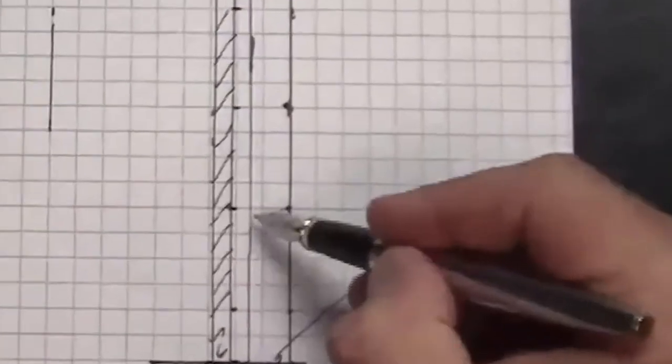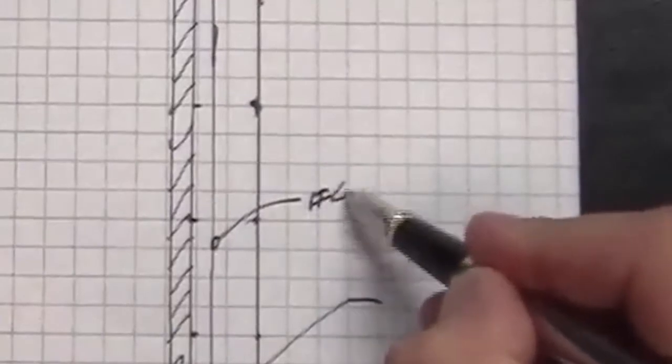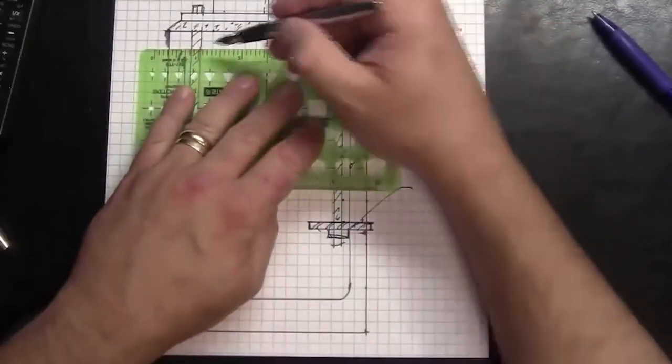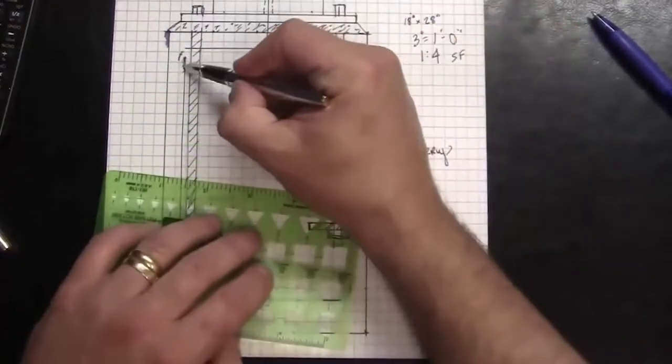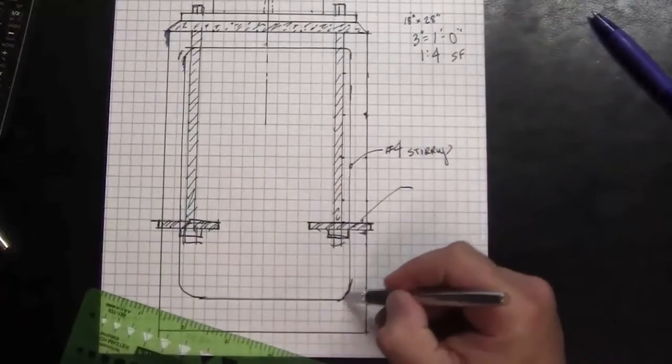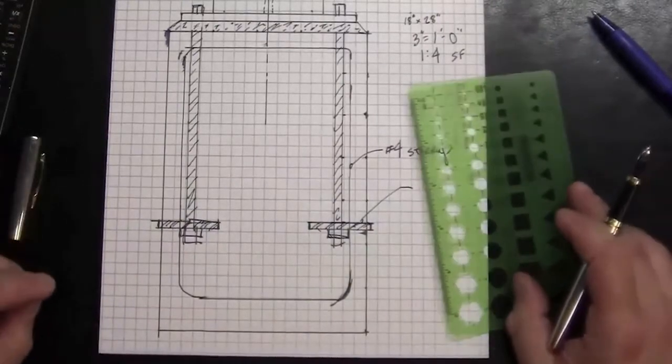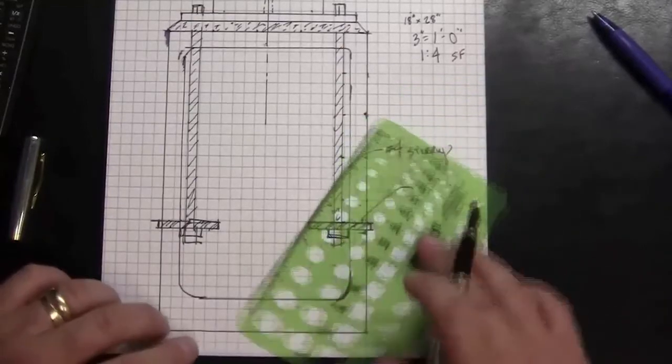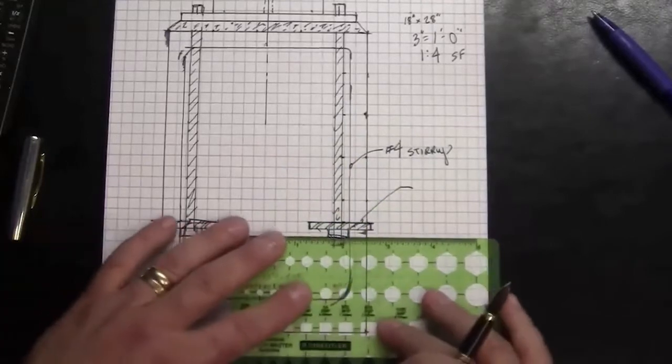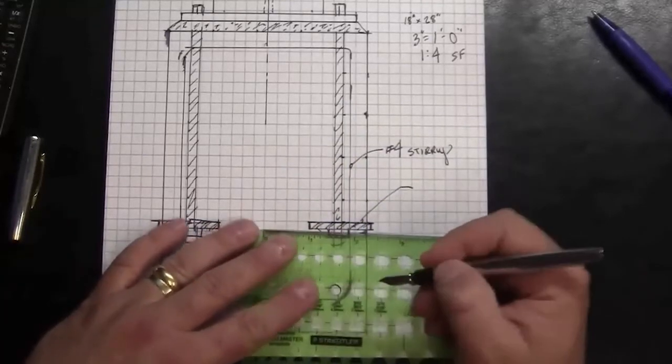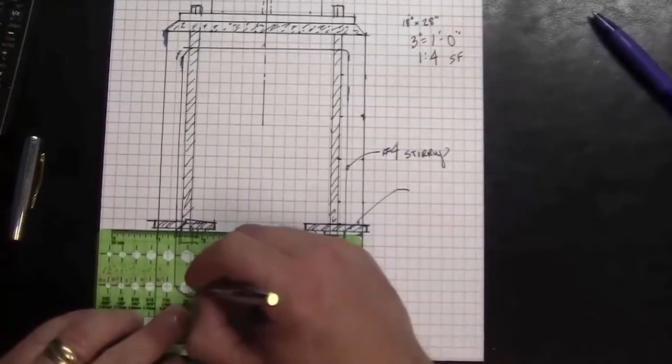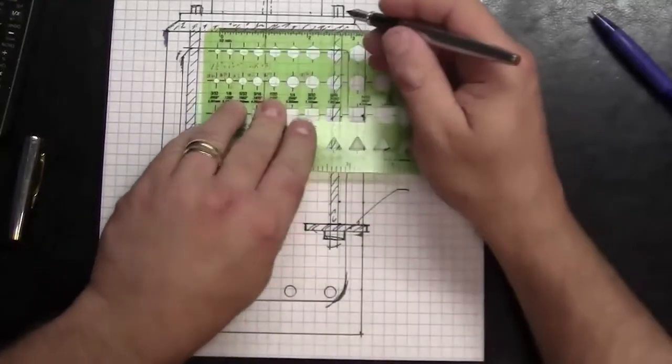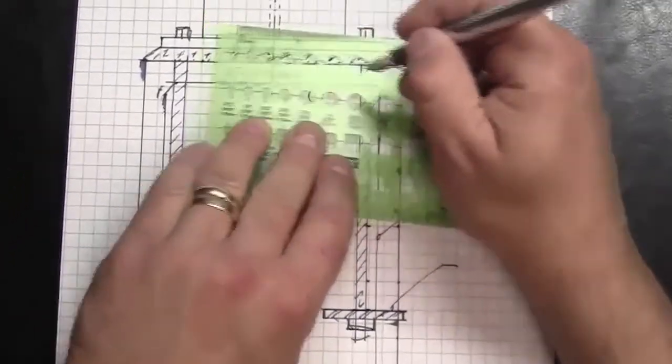Often, this will be a number 3 or a number 4 bar. I'm going to show it with a number 4 stirrup. And as I begin looking at this, I'm going to show number 8 bars. A number 8 bar is 1 inch in diameter, so basically what I'm looking for when I do that is simply a ¼ inch circle at 3 inch scale will give me a number 8 bar. And for this one, I'll show 4 of those at the bottom and 4 of these at the top.